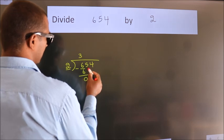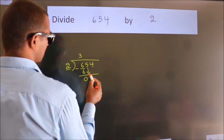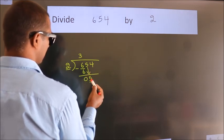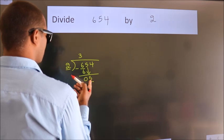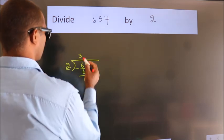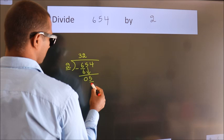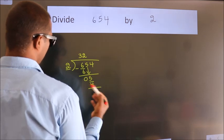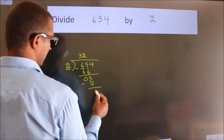After this, bring down the beside number. So 5 down. So 5. A number close to 5 in the 2 table is 2 times 2, which is 4. Now we subtract. We get 1.